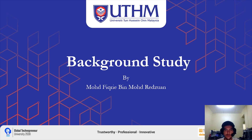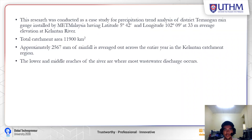Assalamualaikum warahmatullahi wabarakatuh. My name is Muhammad Fikribi Muhammad Rezuan, matric number AF190068. I am going to present the background study. This research was conducted as a case study for precipitation trend analysis of the Temangan district rain gauge installed by Mid Malaysia, having latitude 5°42' and longitude 102°0.9' at 33 meters average elevation at the Kelantan River. The total catchment for Temangan is around 11,900 km² and approximately 2,567 mm of rainfall is averaged across the entire year in the Kelantan catchment region.